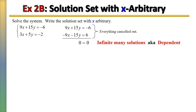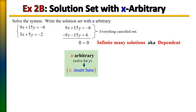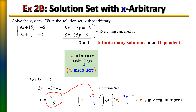Now let's take that same system and write the solution set with x arbitrary. Recall that writing the solution set with x arbitrary means you're going to solve for y and then place that result into y's place of the solution set. Taking one of the equations and solving for y: subtract 3x from each side, divide by 5, and y equals negative 3x minus 2, all over 5. Since that equals y, we plug it into y's place of our solution set. And there you have it.